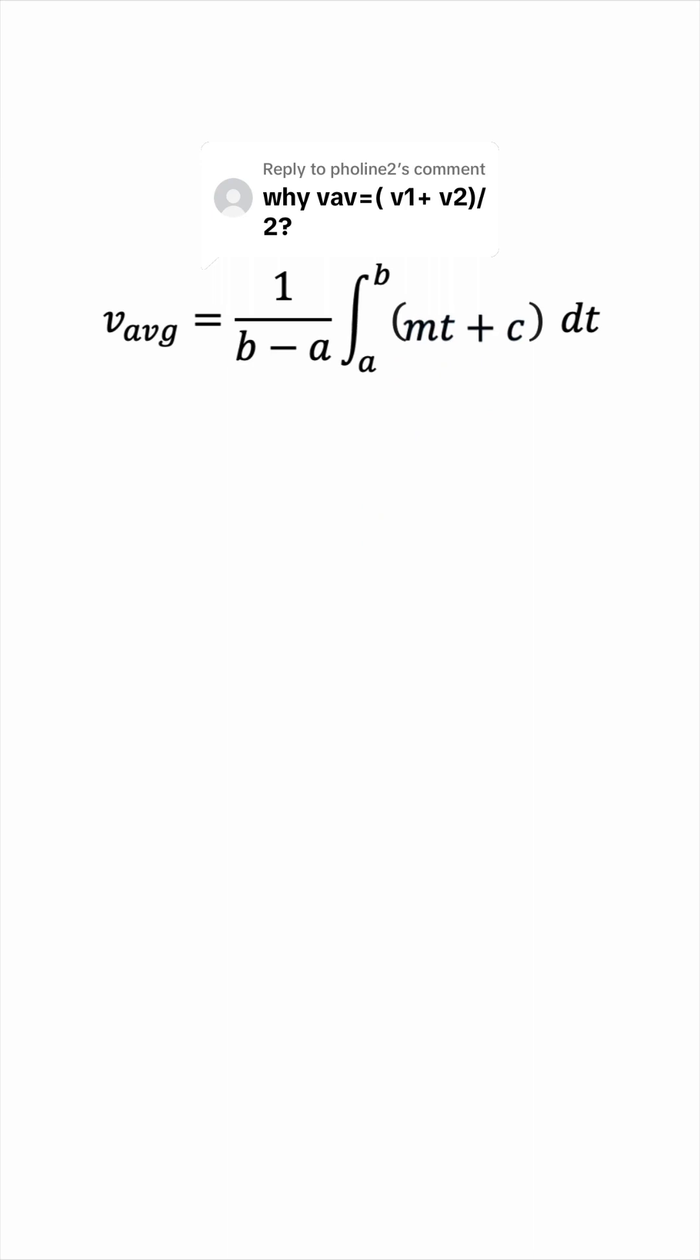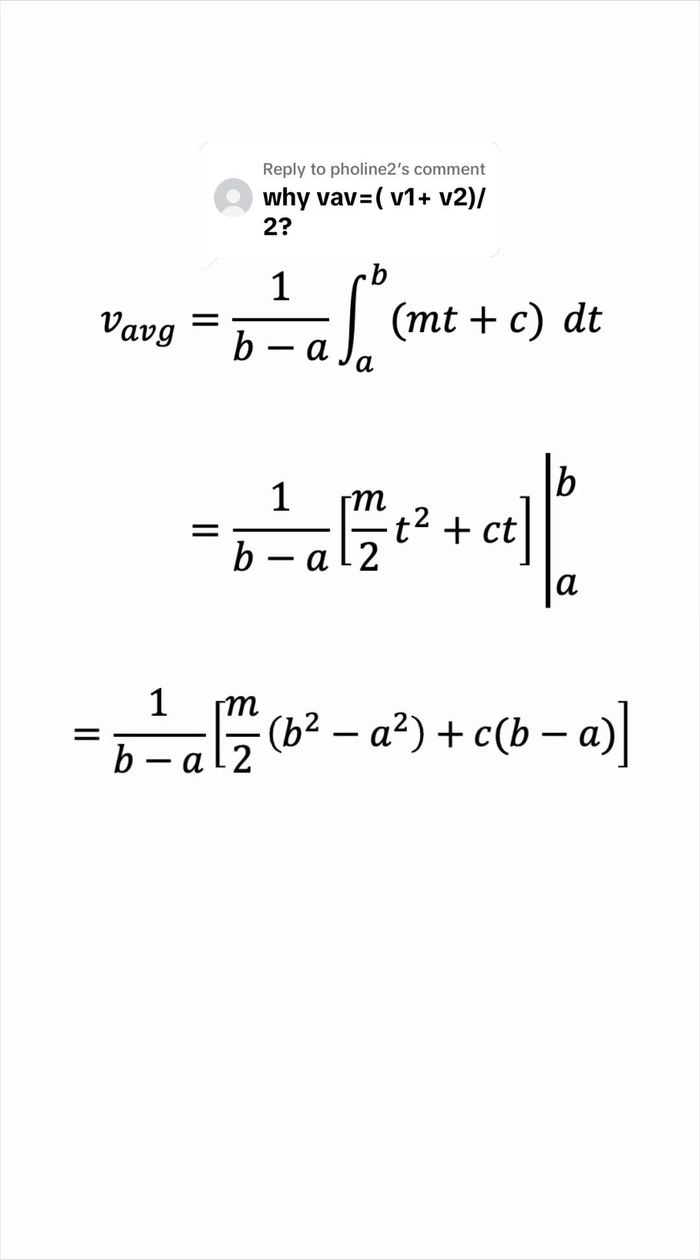Let's integrate this. We'll get m over 2t squared plus ct. Now let's plug in the bounds. We get the following.